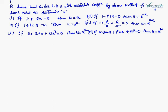To solve second order LDE with variable coefficients, we use some rules to determine u. First, if P + Q·x = 0, then u = x. Second, if P + Q = 0, then u = eˣ. Third, if -P + Q = 0, then u = e^(-x). Fourth, if 1 + P/a + Q/a² = 0, then u = e^(ax). These rules help us determine what u to suppose in the equation.